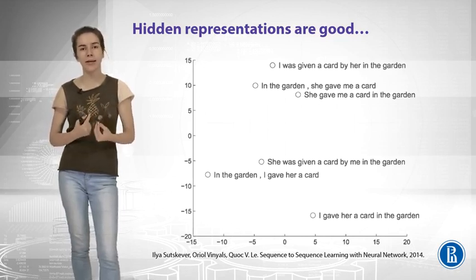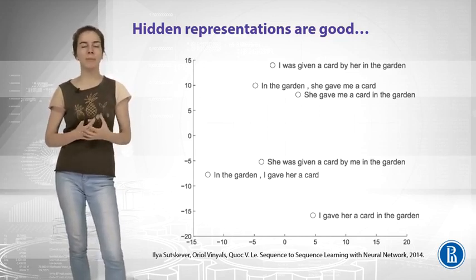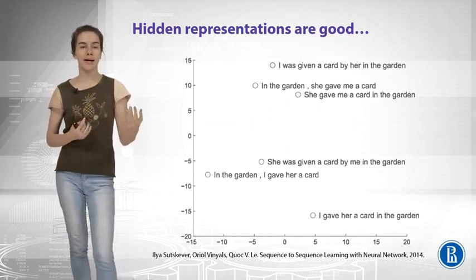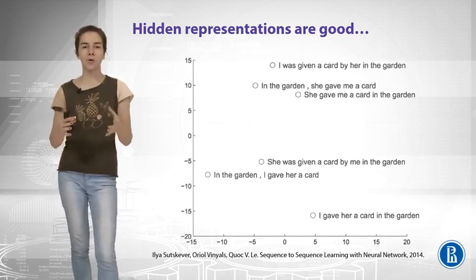And it's nice that the model can capture that active and passive voice doesn't actually matter for the meaning of the sentence. For example, you see that the sentence 'I gave her a card' or 'she was given a card' are very close in this space.